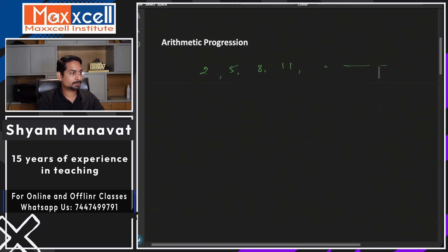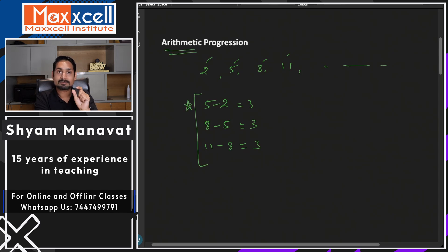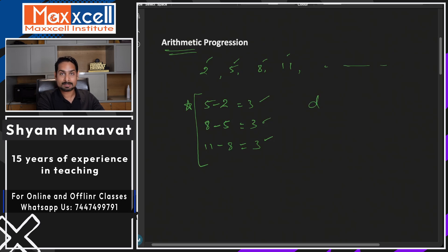Do you see the difference here? If I say 5 minus 2, that gives you 3 — that is the second term minus the first term. If you see the third term 8 minus the second term 5, you also get 3. The fourth term 11 minus the third term 8 — the difference is again 3. This is the identity of arithmetic progression: the difference between any two consecutive terms is the same. This difference is called the common difference, usually represented by a small d.